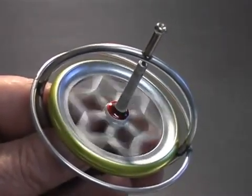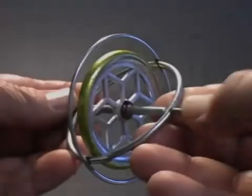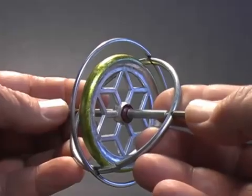This is a gyroscope. It consists of a metal wheel mounted on an axle. The wheel and axle spin freely, secured in a metal frame.